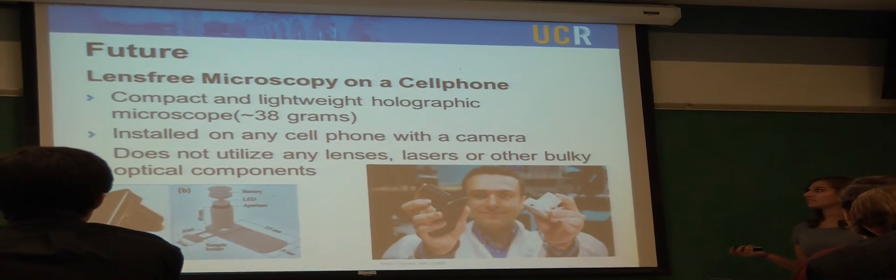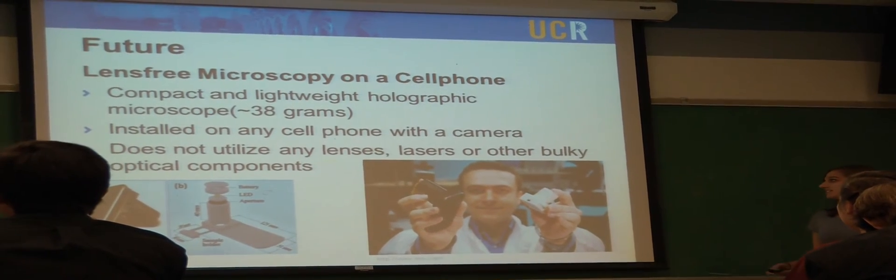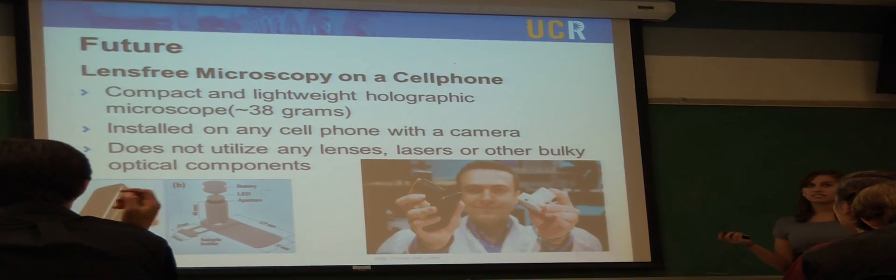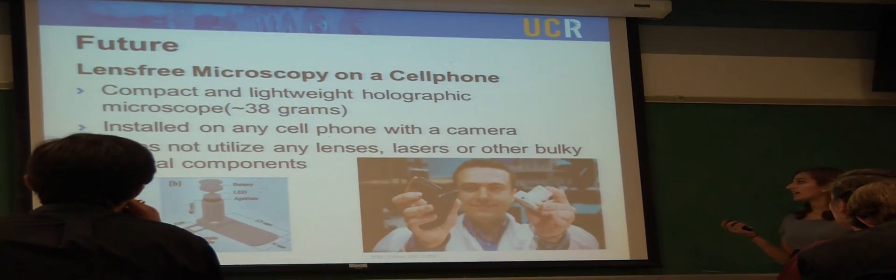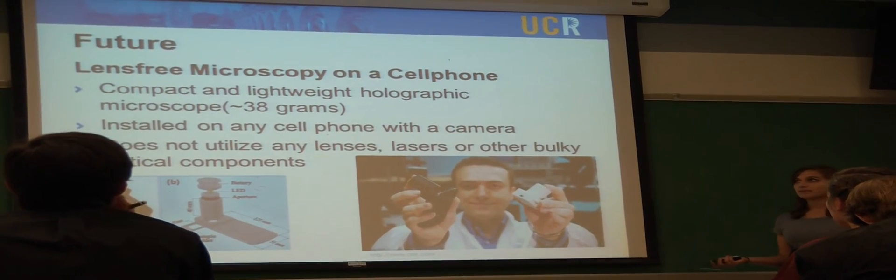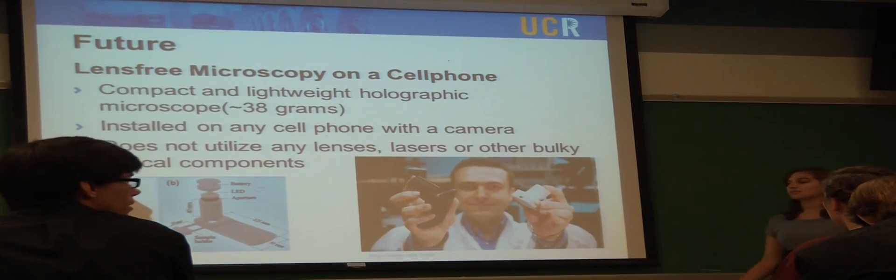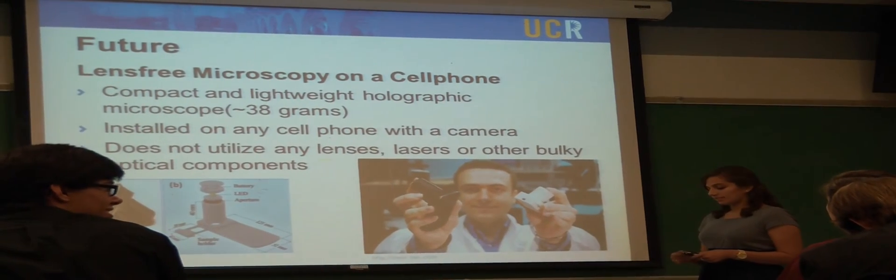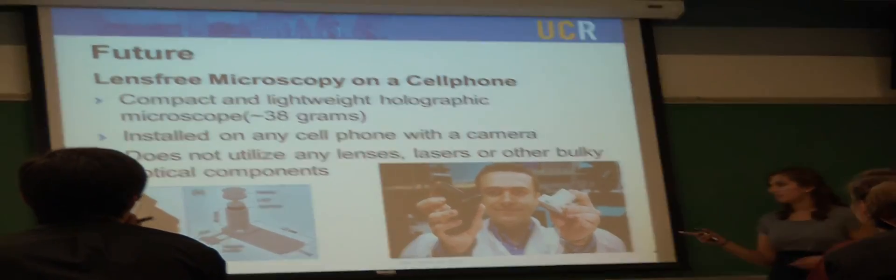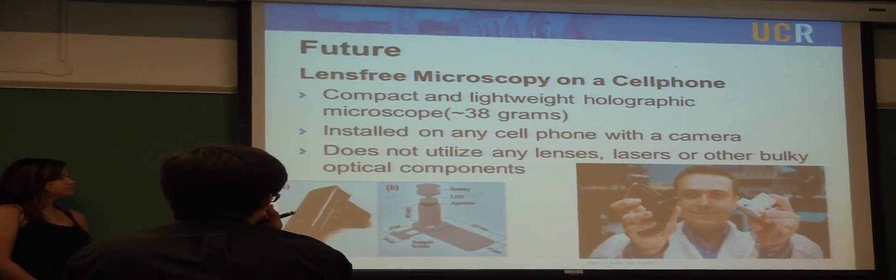The future application for the lab on a chip is the lens-free microscopy on a cell phone. It's a small, compact, lightweight, holographic microscope, and it produces fast, accurate data. It will tell you results almost instantly. It can be installed on any cell phone with a camera, and that's important because almost everyone has a cell phone already. Even in third world countries, they all have a cell phone. It's easy to use. You can place the sample on the chip right here. You can put the sample here and it will give you the image of whatever you're trying to see. If it has malaria parasite, you can see it.